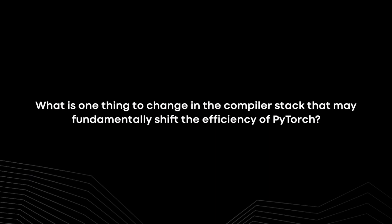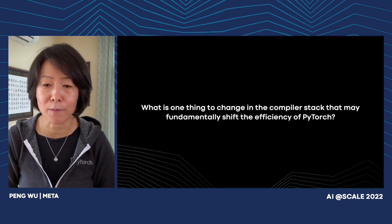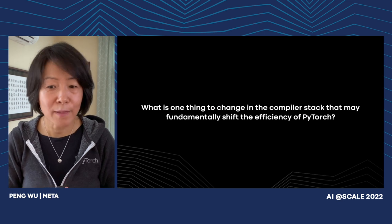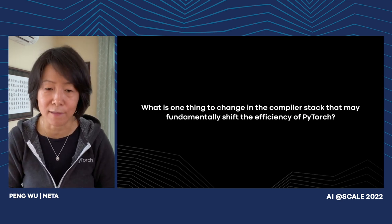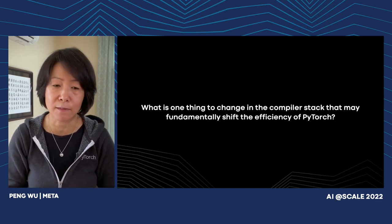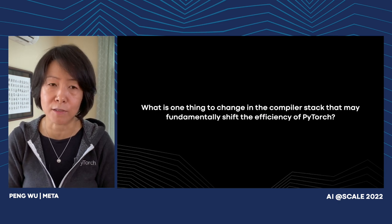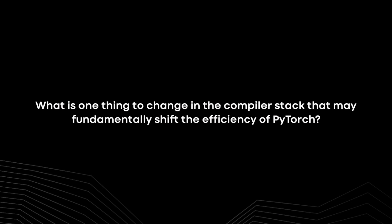After TorchScript, we came out with new generations of compiler technologies like FX and lazy tensor. They addressed some aspects of TorchScript's limitations, but not all of them. Given this fragmented compiler technology space, we started asking ourselves: what is the one thing we could change in the compiler stack that would fundamentally shift the efficiency of PyTorch? The answer surprised us. As compiler veterans, we usually think about adding optimizations or hardware support, and we seldom pay attention to the front end. But when we looked at the entire stack of PyTorch compilers, we realized the graph capture component is the choking point of the entire system, and we really need better graph capture technology to unlock the potential of the PyTorch ecosystem.